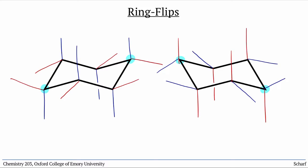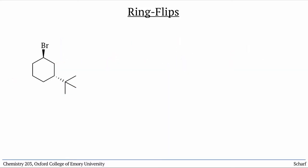Let's show this with an example. Trans-1-bromo-3-tert-butyl-cyclohexane has this structure. Let's draw one of its chair conformations.